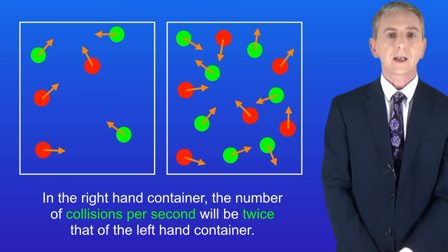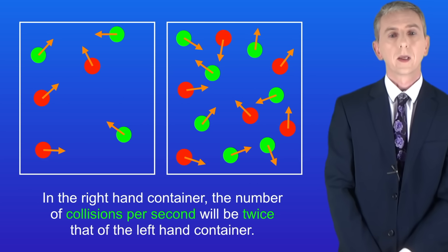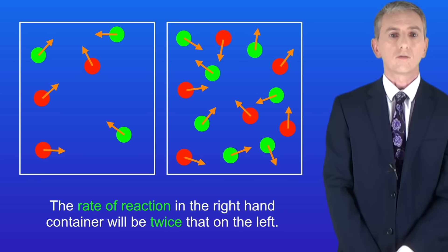This means that in the right-hand container the number of collisions per second will be twice that of the left-hand container. Because of that, the rate of reaction in the right-hand container will be twice that on the left.